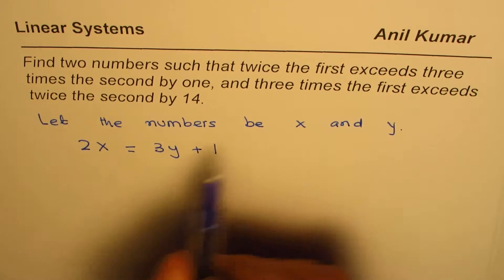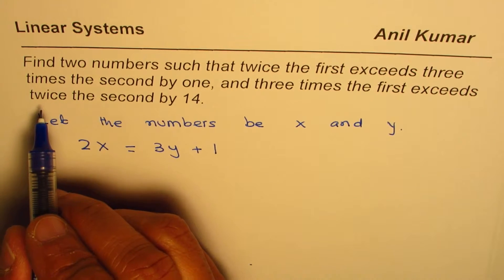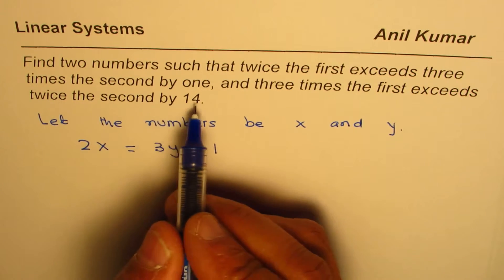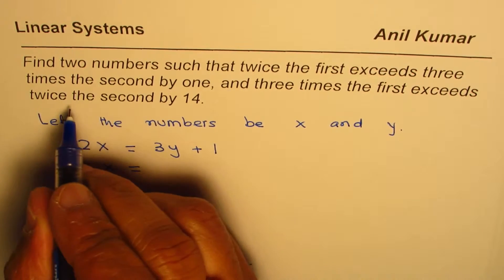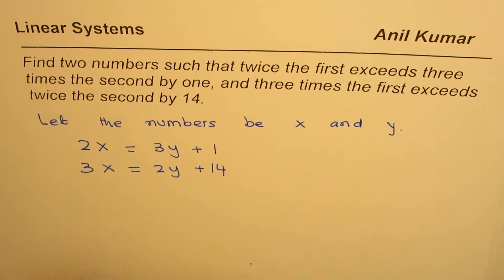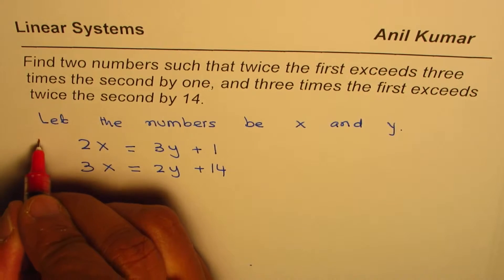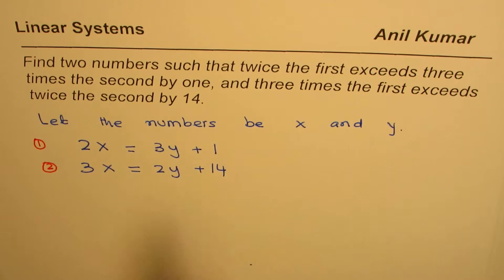Three times the first exceeds twice the second by 14, so 3x = 2y + 14. That's how we get the second equation. We have equation 1 and equation 2. I'd like you to see how we translated these statements into equations—that's the most important part. Now we solve these two equations to find the result.